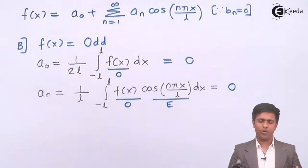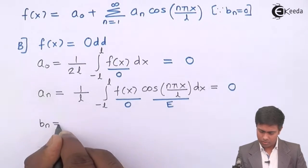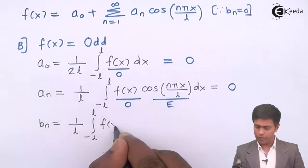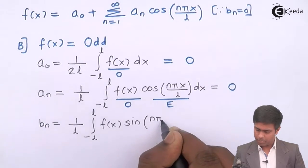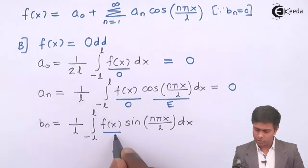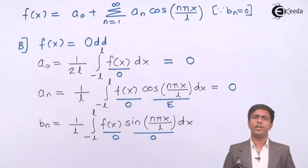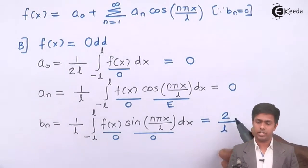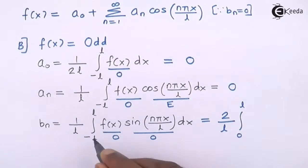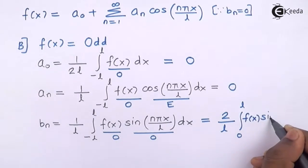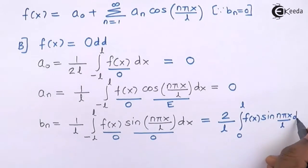We just have to find bₙ. bₙ is one upon l times the integral from negative l to positive l of f of x sin(nπx/l) dx. Since f of x is odd and sine is a universal odd function, odd into odd is even. We use the property of even functions, giving two over l times the integral from zero to l of f of x sin(nπx/l) dx.